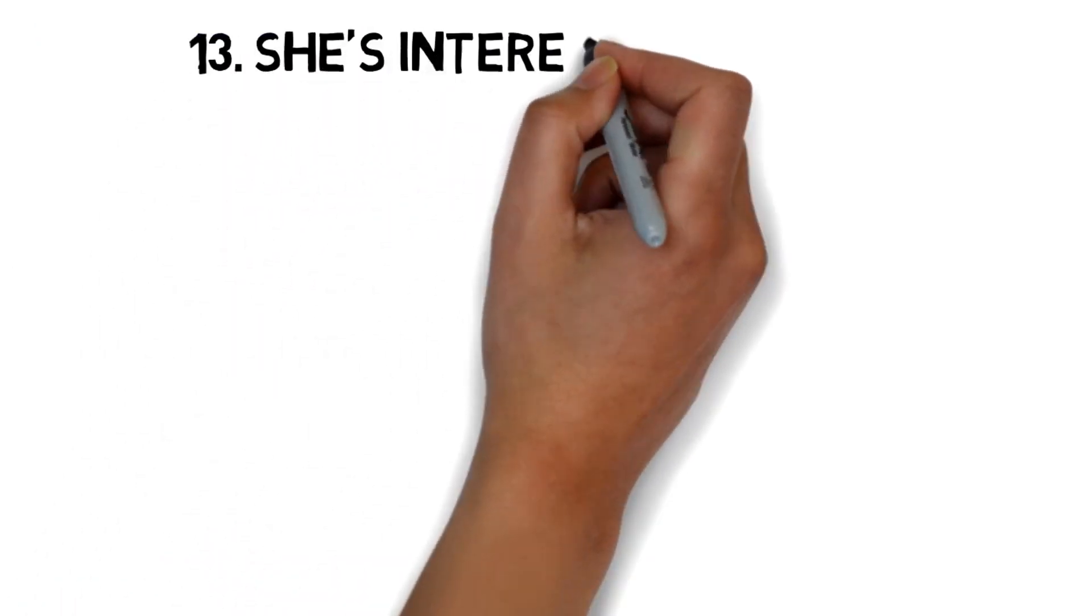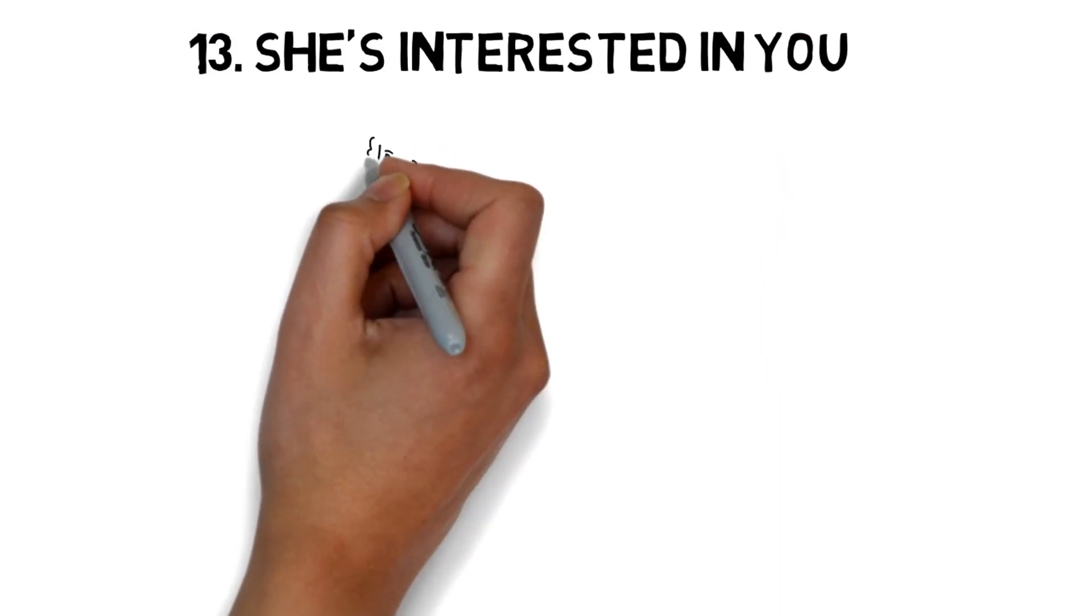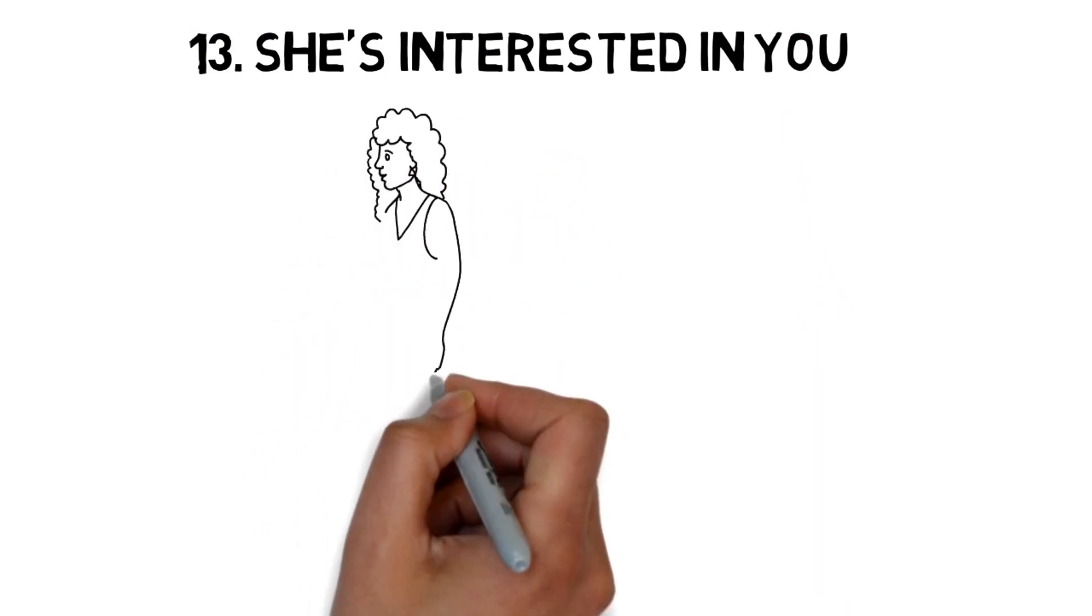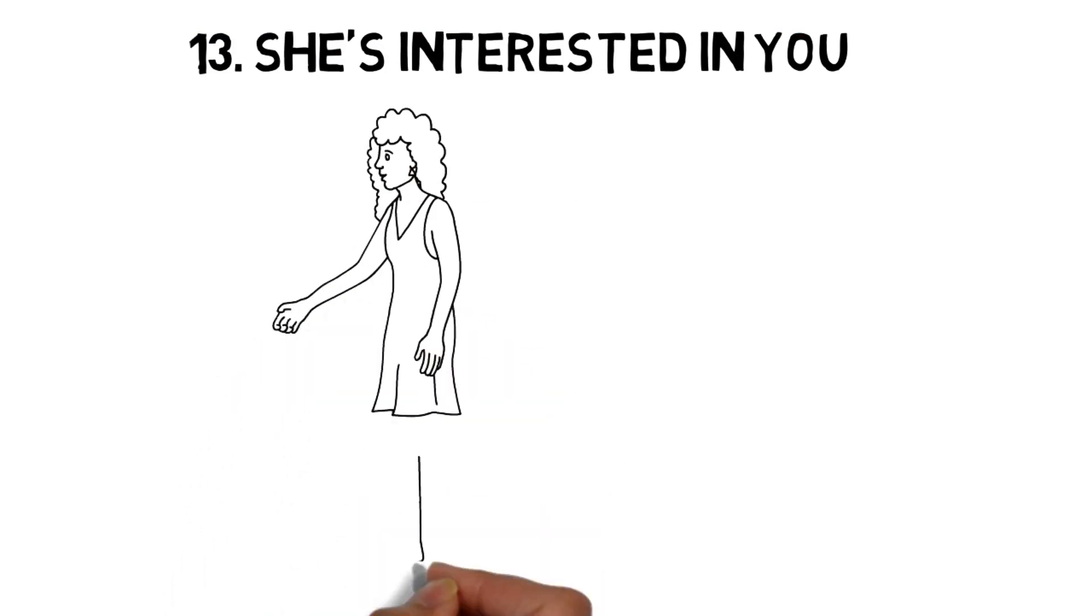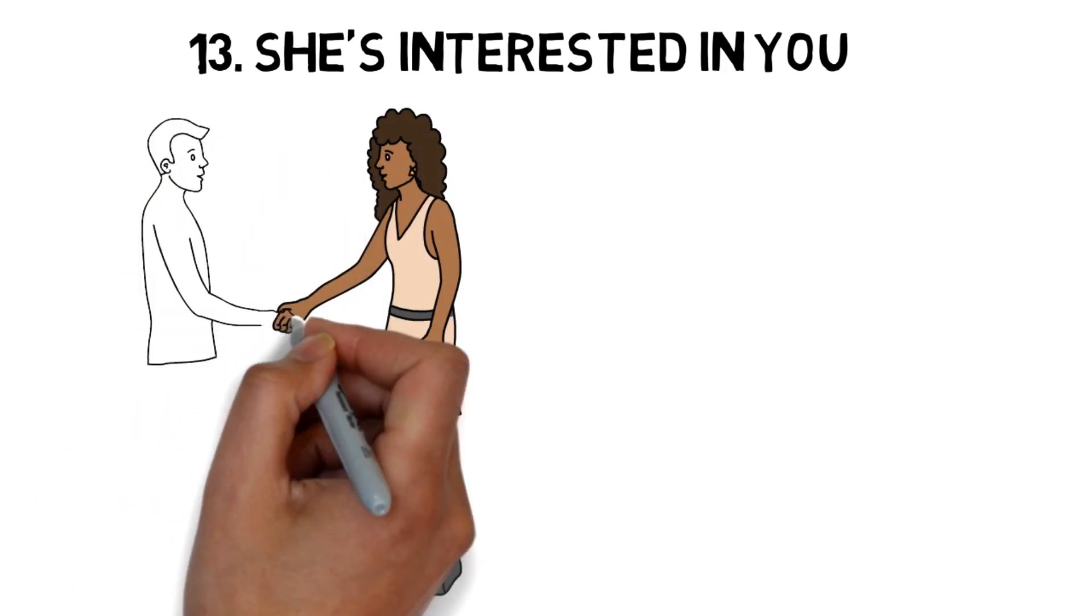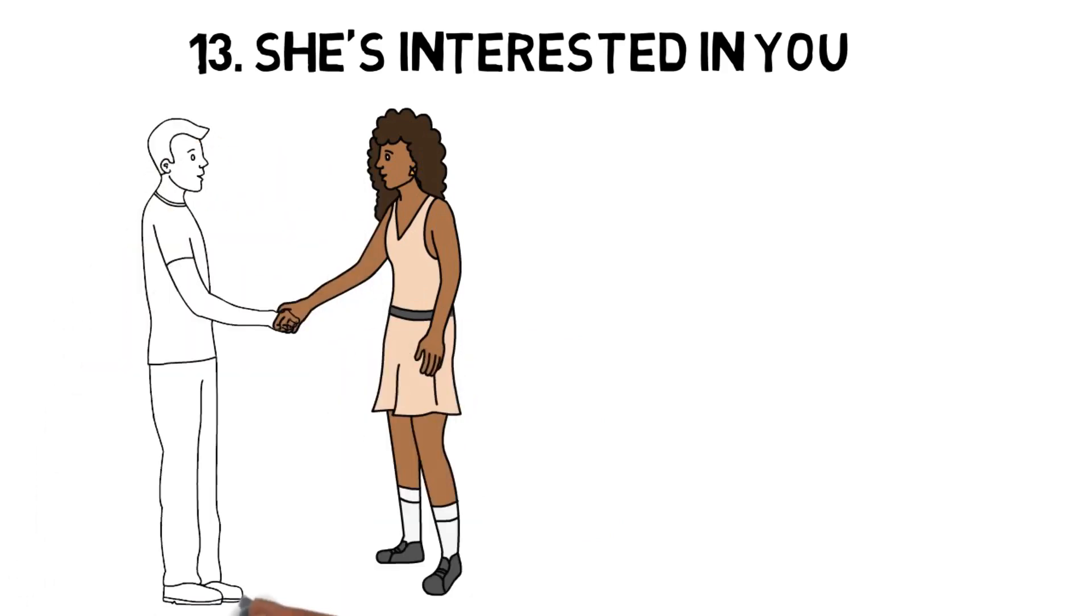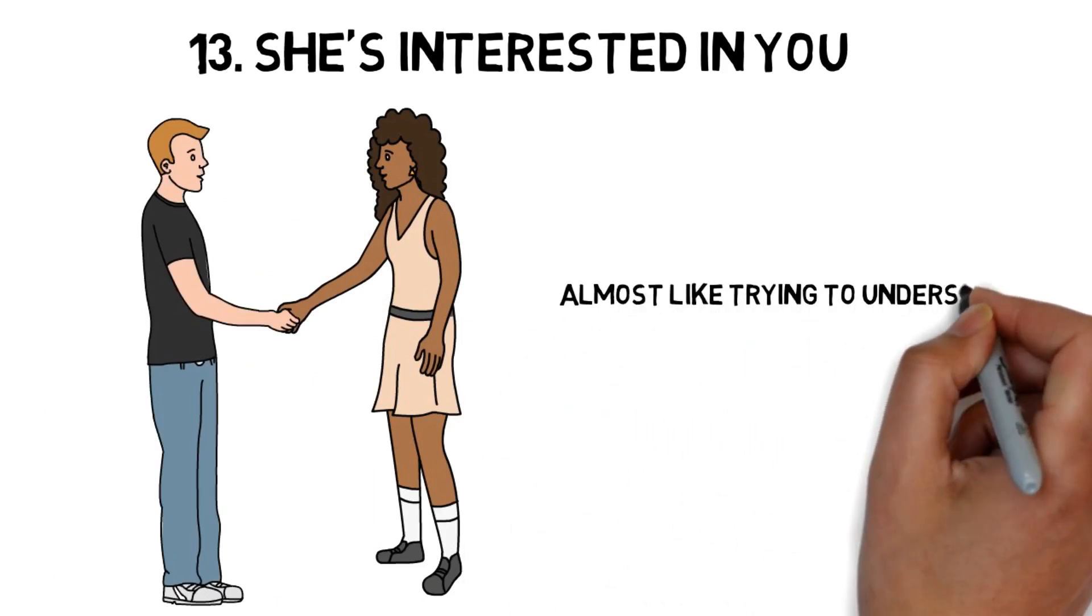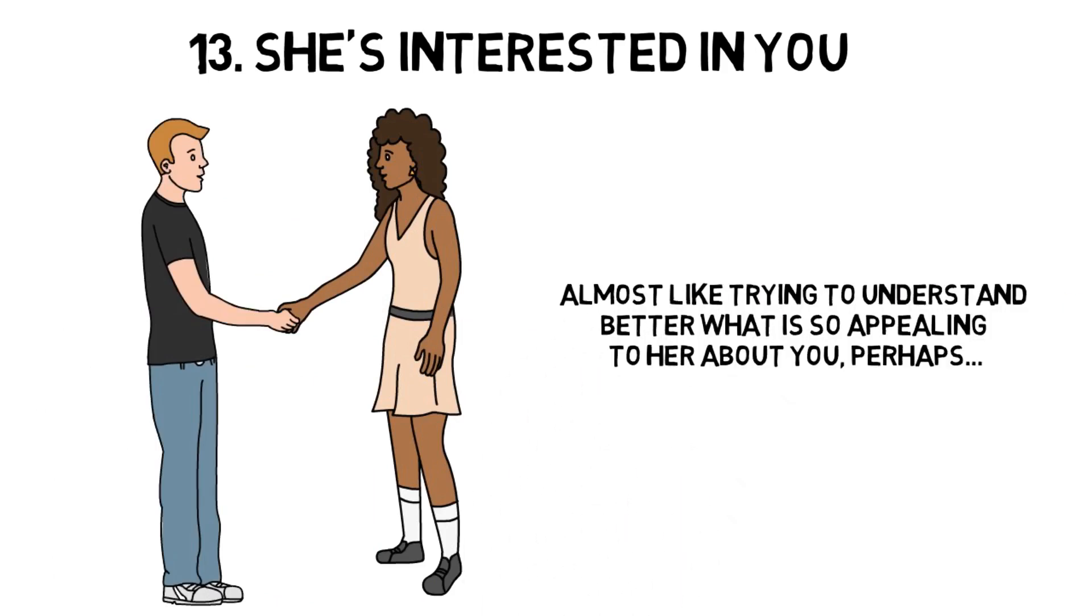13. She's interested in you. You may not have known each other for a long time, but she already knows a lot about you. When you are together, either the two of you or among mutual friends, she seems particularly interested in you. She asks you questions and seems to listen to the answers with great interest. You may not be aware of it, but she is actually trying to get to know you better, to understand you better. Almost like trying to understand better what is so appealing to her about you, perhaps.